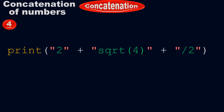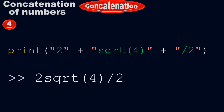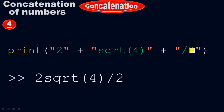Example number 4: print of 2 inside the quotes plus square root of 4 inside the quotes plus over 2 inside the quotes — we will get the output '2 square root of 4 over 2'. We have 3 terms here: 2 inside the quotes, square root of 4 inside the quotes, and over 2 inside the quotes. After concatenation, all 3 terms come together to make a single expression: 2 square root of 4 over 2. You can concatenate anything, as long as the term is enclosed inside the quotes and you use the addition operator.